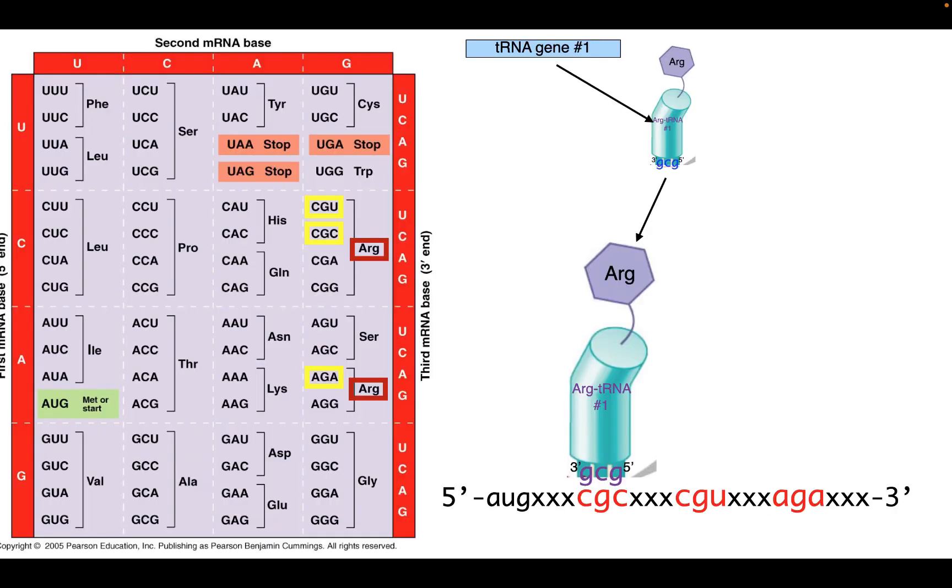By redundancy, what we're talking about here is this. If you look at the codons that encode arginine, what you would see is that there's more than one. In fact, there's one, two, three, four, and then down here, five, six. Six different codons encode the exact same amino acid arginine.